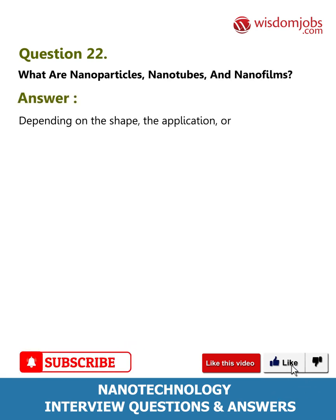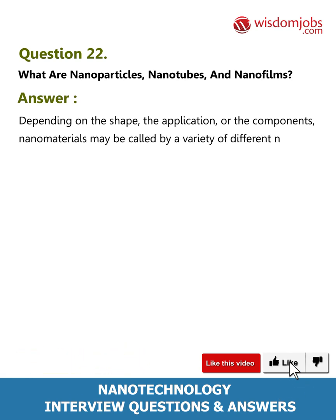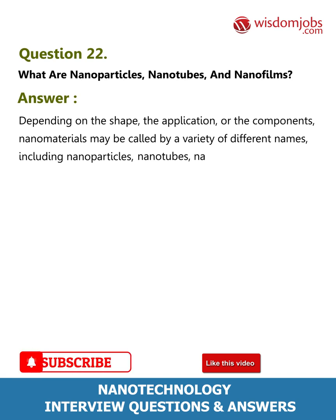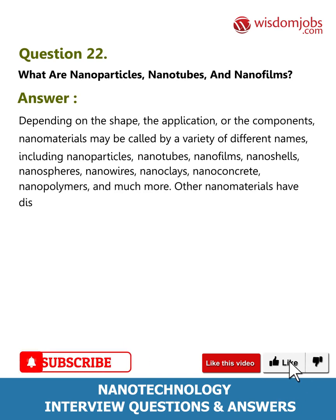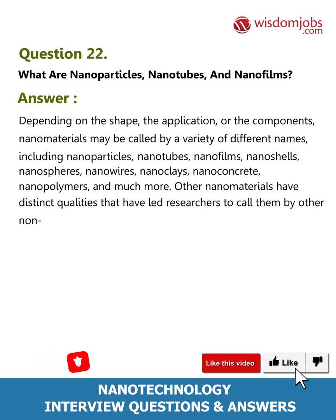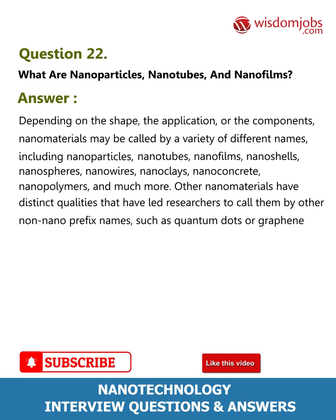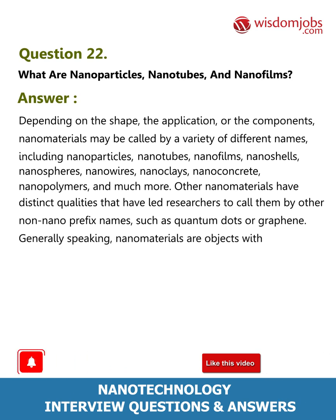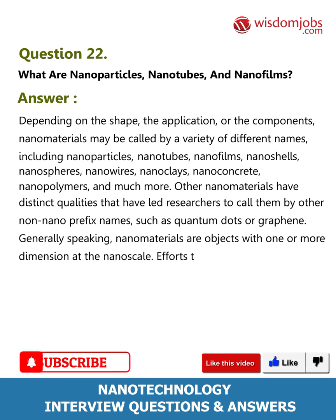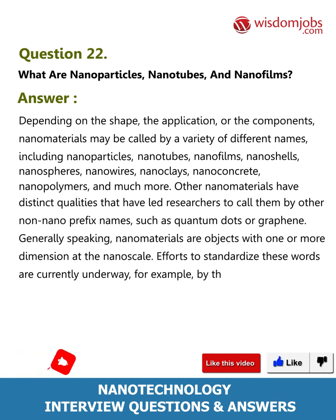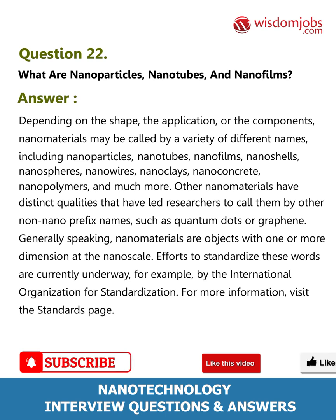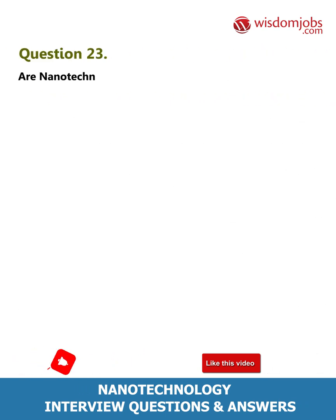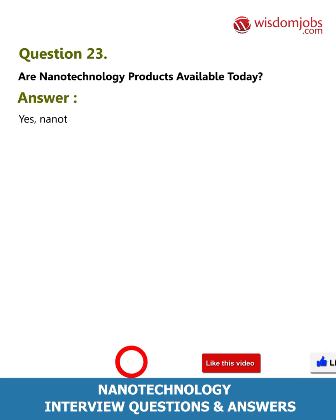Question 22: What are nanoparticles, nanotubes, and nanofilms? Depending on the shape, application, or components, nanomaterials may be called by a variety of different names, including nanoparticles, nanotubes, nanofilms, nanoshells, nanospheres, nanowires, nanoclays, nanoconcrete, nanopolymers, and more. Other nanomaterials have distinct qualities leading researchers to call them by non-nano-prefix names such as quantum dots or graphene. Generally, nanomaterials are objects with one or more dimensions at the nanoscale, and efforts to standardize these terms are currently underway by organizations such as the International Organization for Standardization.